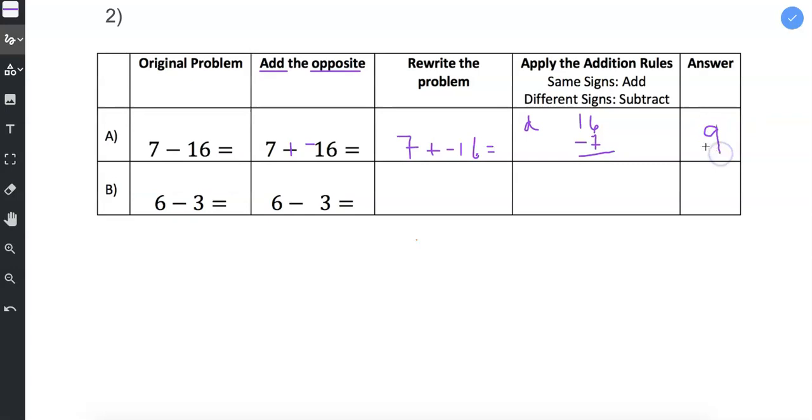Now the question is, should it be a negative 9 or a positive 9? Well, if I look back, I only have 7 positives and 16 negatives. So the negatives, in a sense, you could say win out. So 7 minus 16 or 7 plus a negative 16 is equal to negative 9.